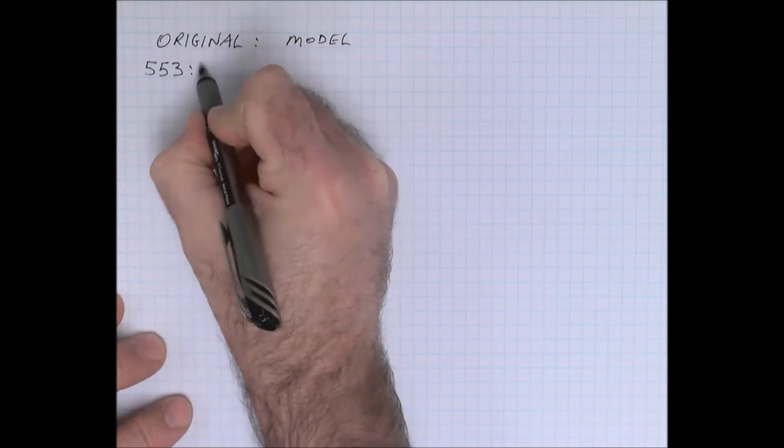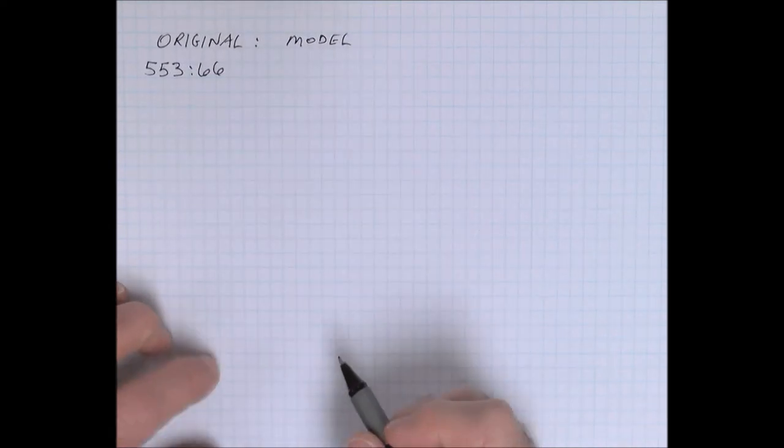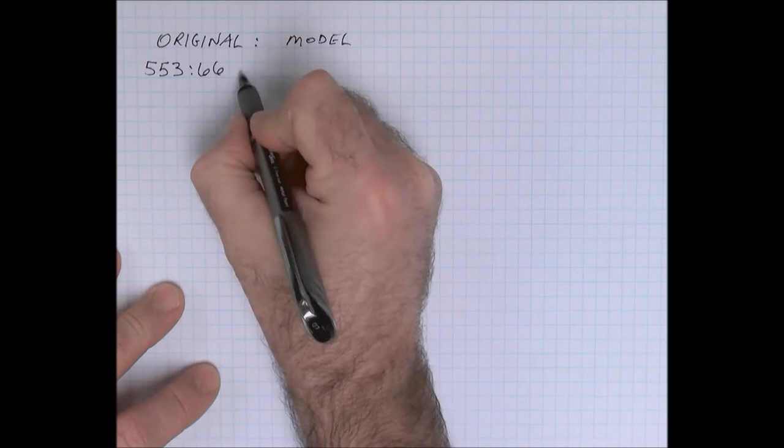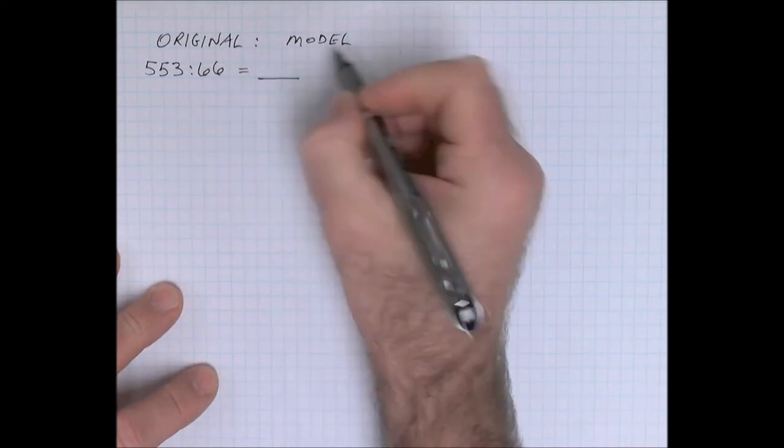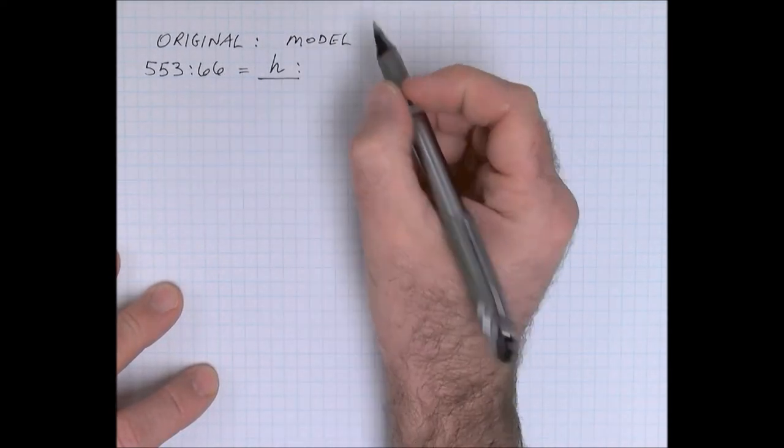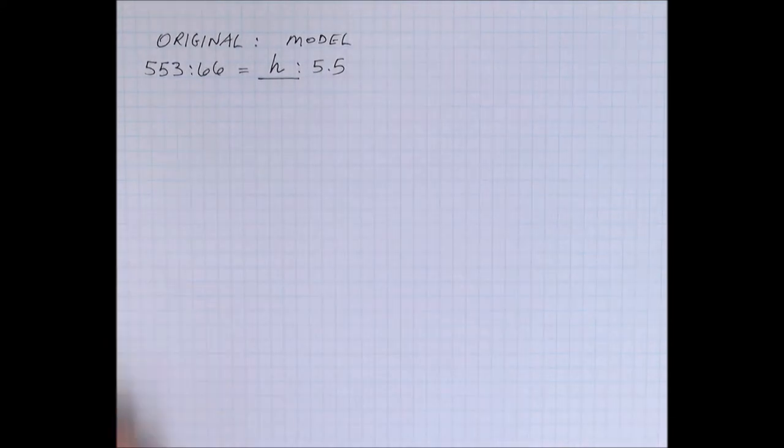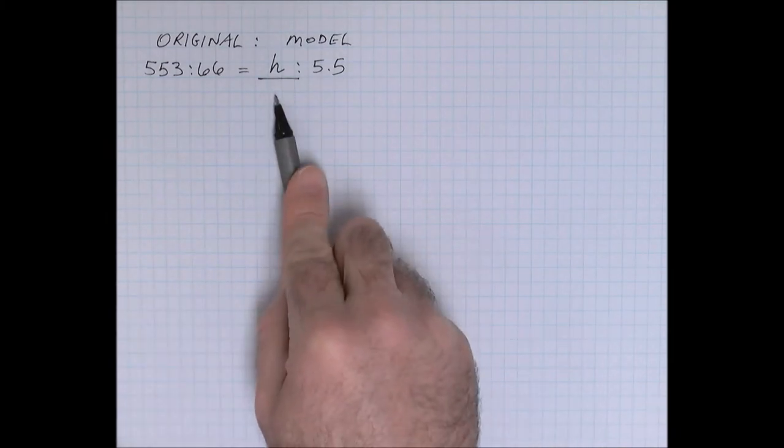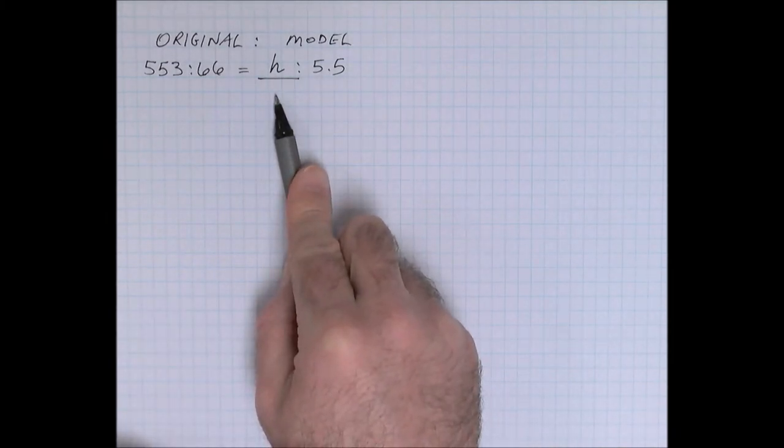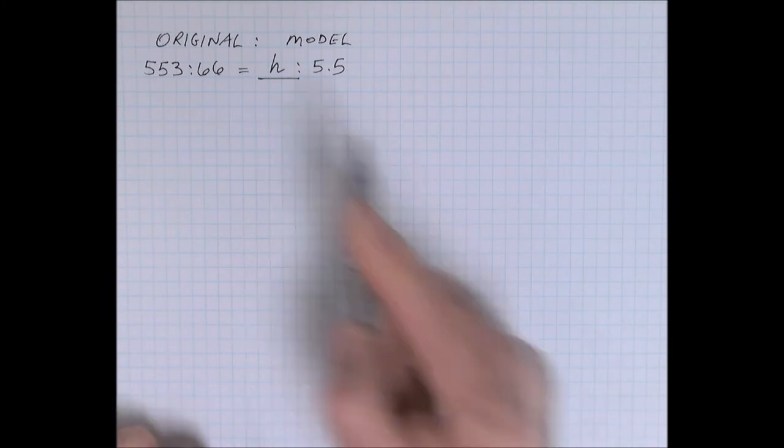can be expressed in a ratio of 553 compared to some unknown height. I'm going to use the variable h to stand for height compared to the 5.5 meters. So we are tasked with finding out how tall the model will be—what's the height of the model—so that we can figure out will she have enough room. Remember,